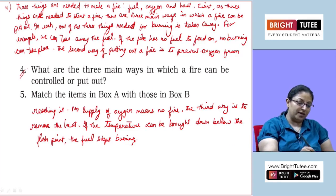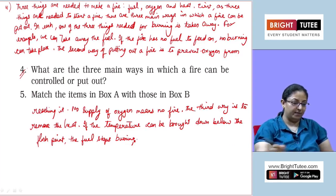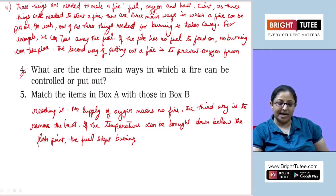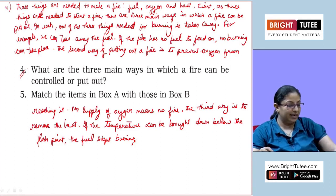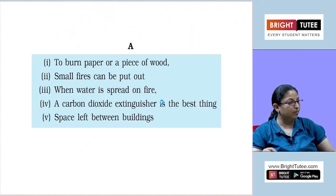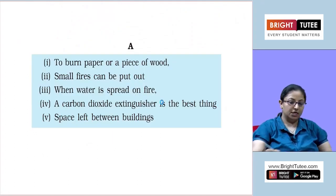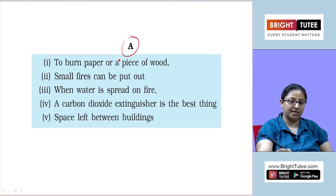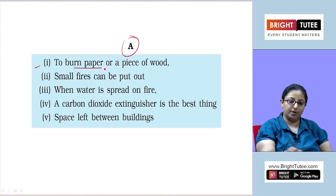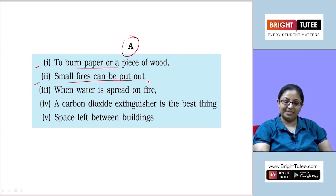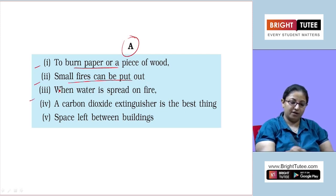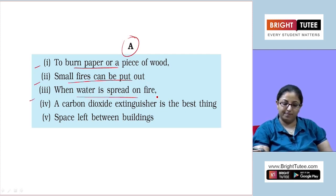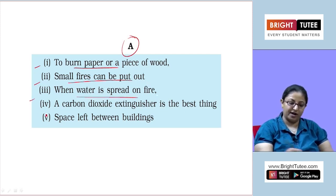Coming to question number five — match the items in box A with those in box B. Box A: first, to burn paper or a piece of wood; second, small fires can be put out; third, when water is spread on fire; fourth, a carbon dioxide extinguisher is the best thing; fifth, space left between buildings.